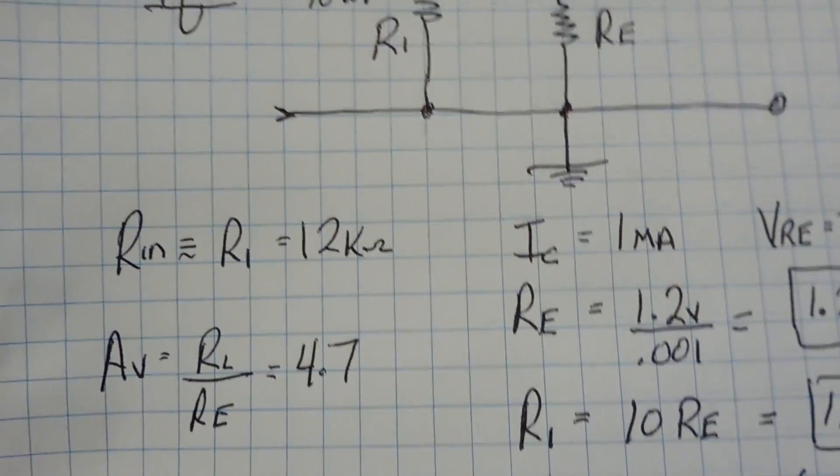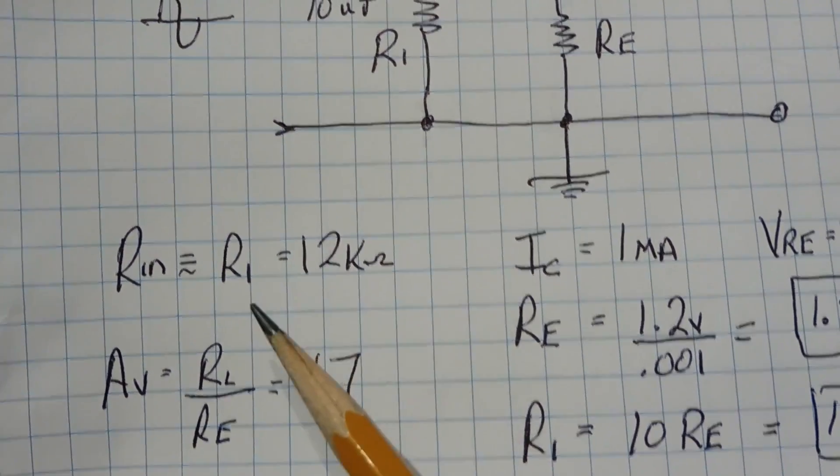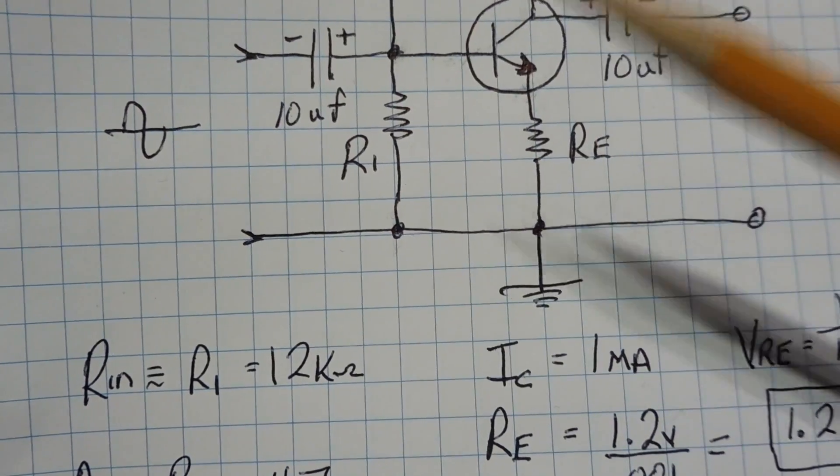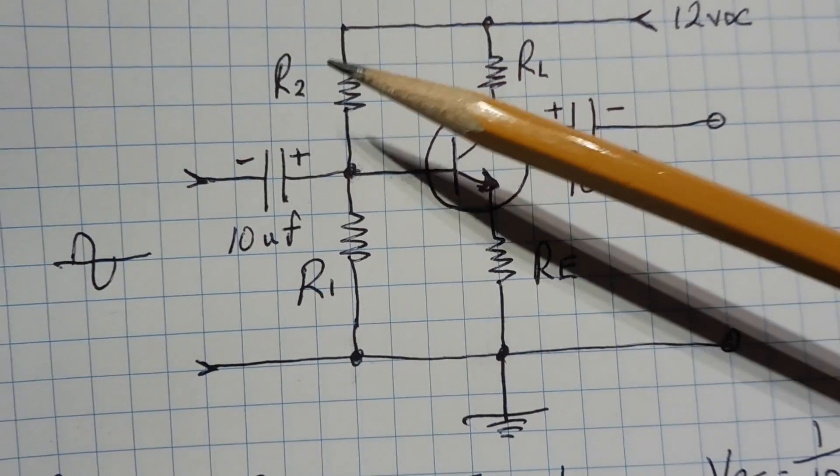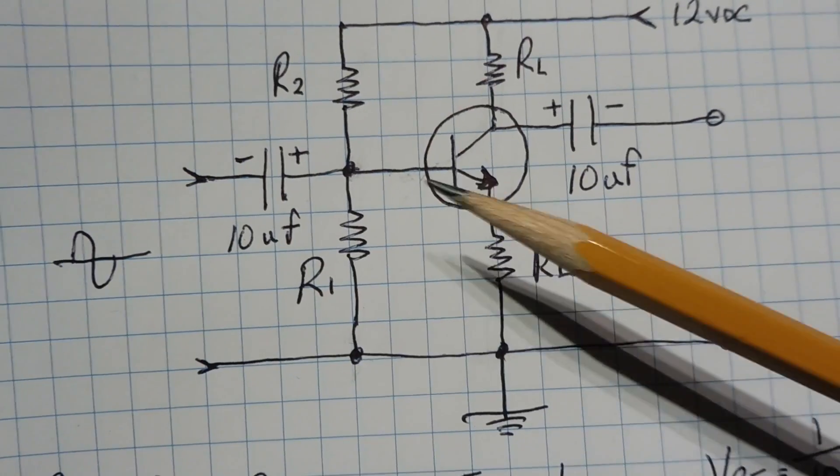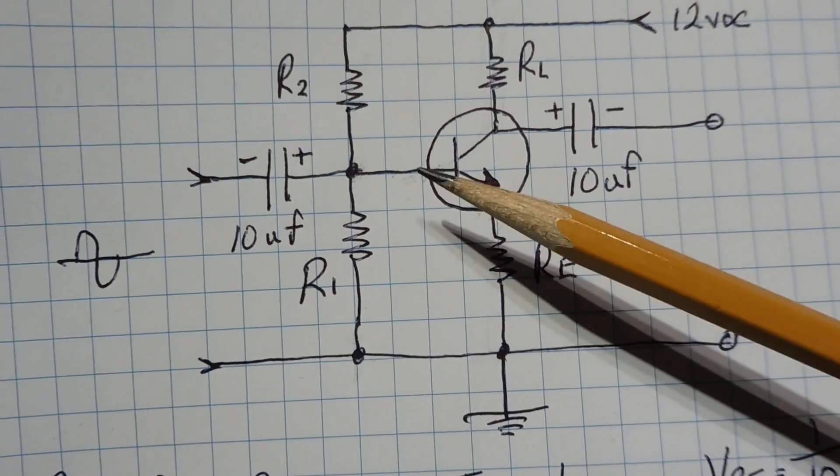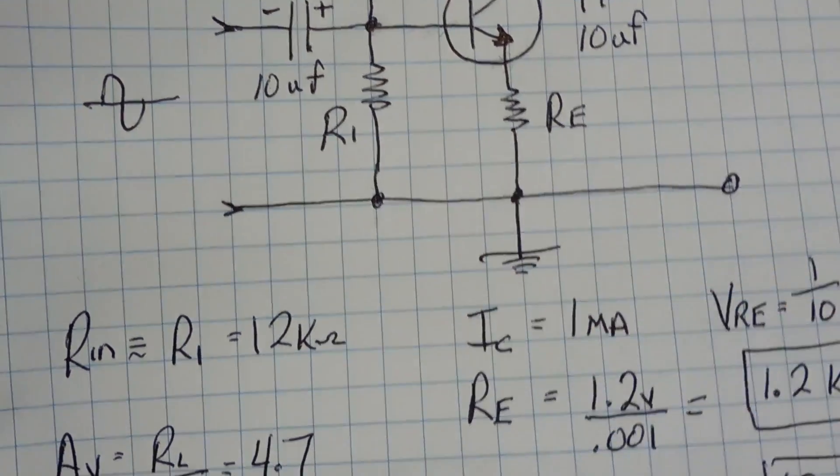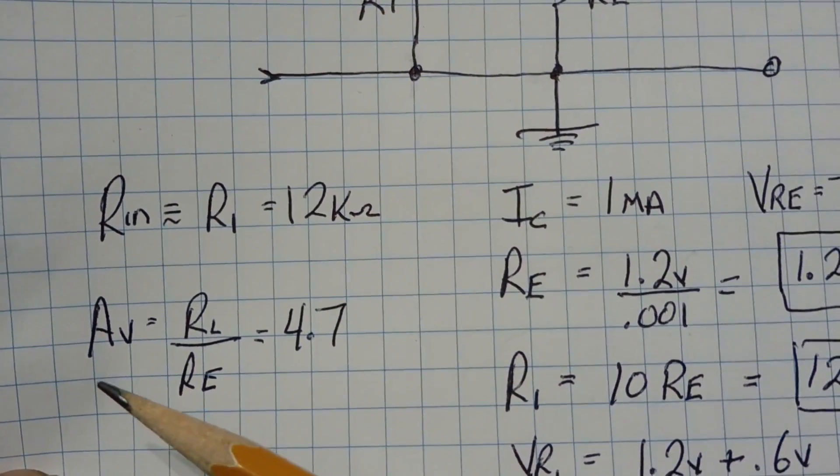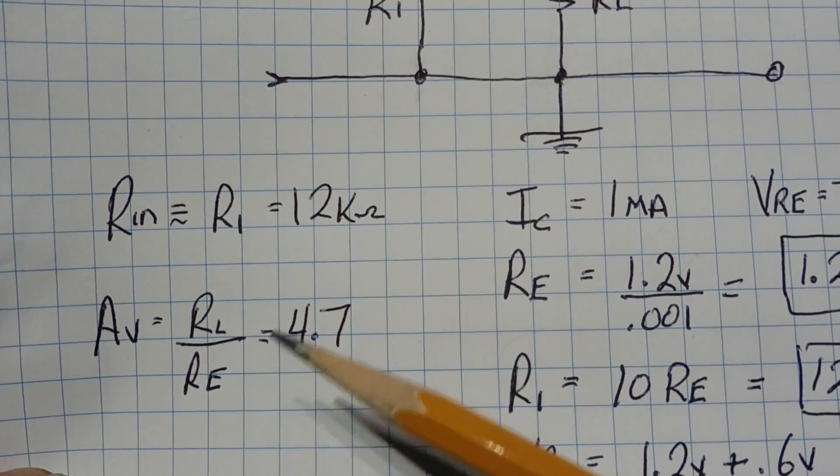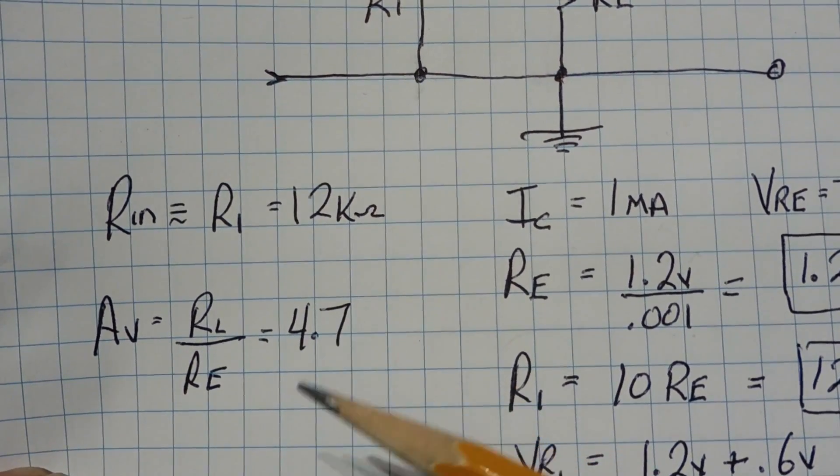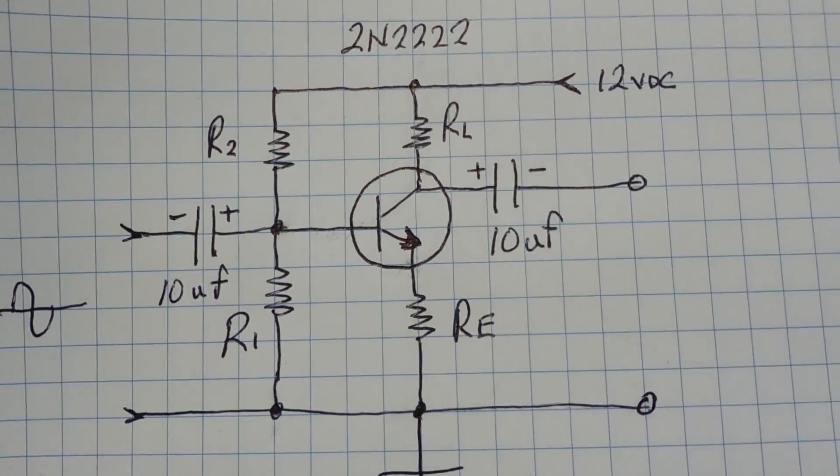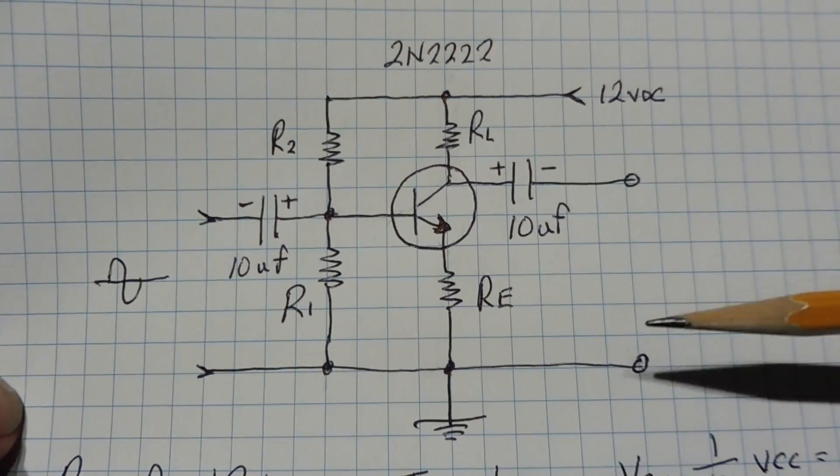Now the RIN input impedance of this amplifier will be R1, basically R1 here, and it's about 12K. It's approximate because it's actually R1 in parallel with R2 in parallel with small RIN, which is RE reflected back to the base. But it's going to be around the R1 value, so we'll take it as 12K. And the gain of this amplifier will be RL divided by RE, which equals 4.7, which is close to 5 which we wanted. So there's our four resistors, and we'll plug them into the circuit and check the operation of our common emitter amplifier.